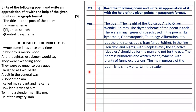Read the following poem and write the appreciation in paragraph format. The poem The Height of the Ridiculous is by Oliver Wendell Holmes. The rhyme scheme is ABCB. Figures of speech include hyperbole, onomatopoeia, tautology, alliteration, etc. The one that stands out is transfer epithet — in line 10, 'days and nights with sleepless I,' the adjective sleepless should be used for the man and not for the eye. The poem is a humorous one written for enjoyment, and its main purpose is to simply entertain the reader.